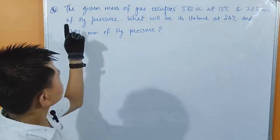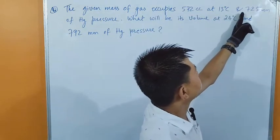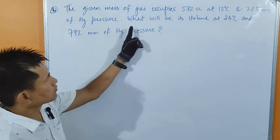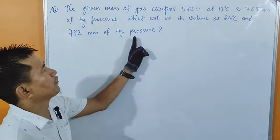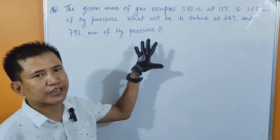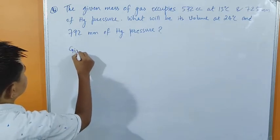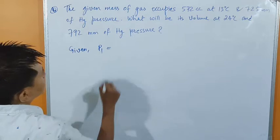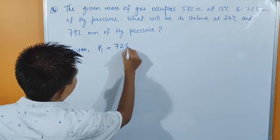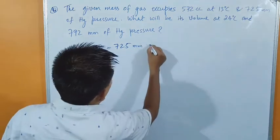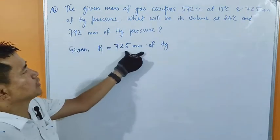Let us read out the question first. A given mass of gas occupies 572 cc at 13 degrees Celsius and 725 mm of Hg pressure. What will be its volume at 24 degrees Celsius and 792 mm of Hg pressure? Let us first write what is given to us. Given: P1 is pressure one, 725 mm of Hg pressure.